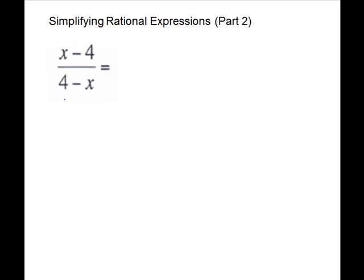These are what we call negative identicals or opposites. They are exactly the same pieces with opposite signs. We can force these to be alike. And we do that by factoring out a negative 1. We can factor it out of either piece.